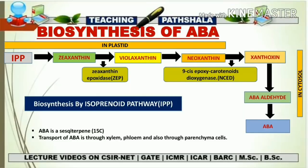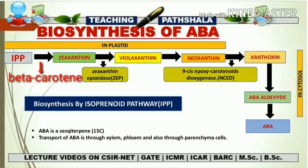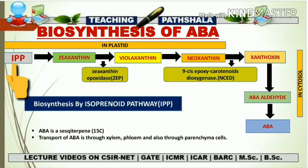The precursor molecule IPP, with the presence of some intermediates and different enzymes, is converted into zeaxanthin. Before converting to zeaxanthin, IPP passes through the intermediate compound beta-carotene. During the biosynthesis pathway of ABA, beta-carotene is an important intermediate, and after that beta-carotene is converted into zeaxanthin. So beta-carotene is the intermediate compound between IPP and zeaxanthin.